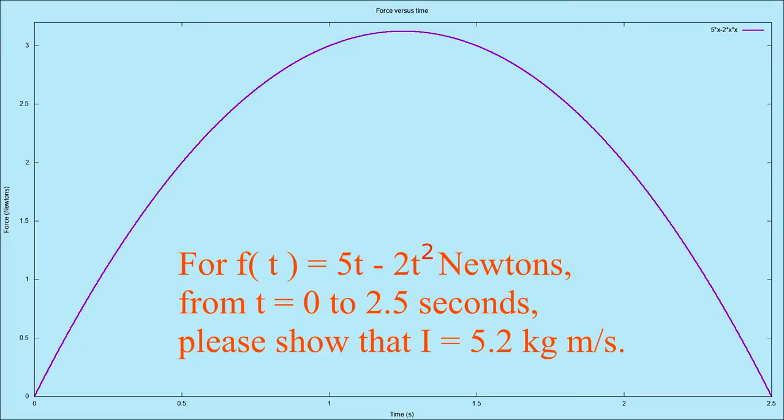For F of t equals 5t minus 2t squared in newtons, from t equals 0 to 2.5 seconds, please show that I equals 5.2 kilogram meter per second.